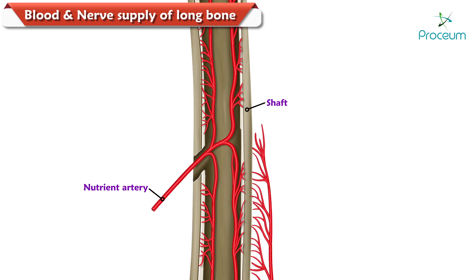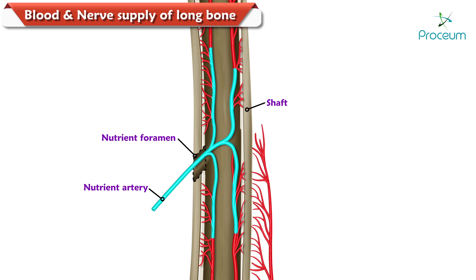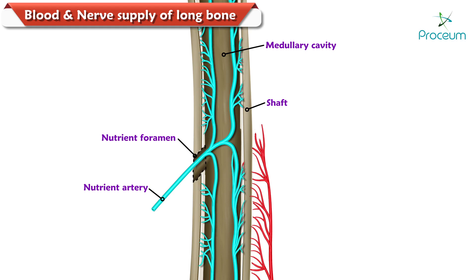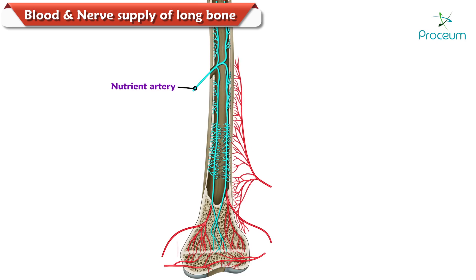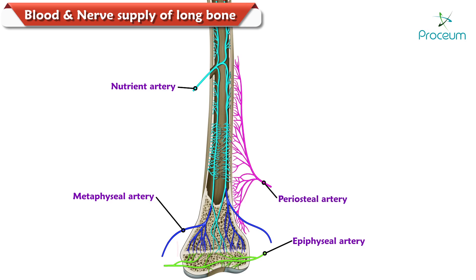The nutrient artery enters the middle of the shaft through a nutrient foramen, runs obliquely, and then divides into ascending and descending branches in the medullary cavity. Each branch then subdivides into a number of smaller parallel vessels which enter the metaphysis and form hairpin loops.